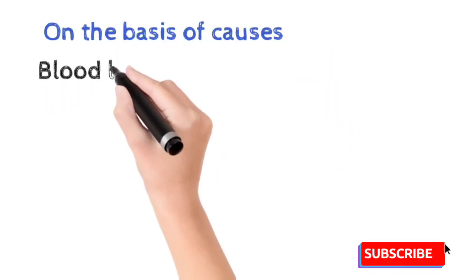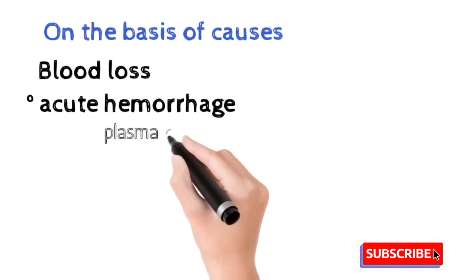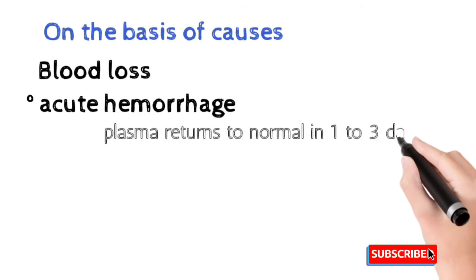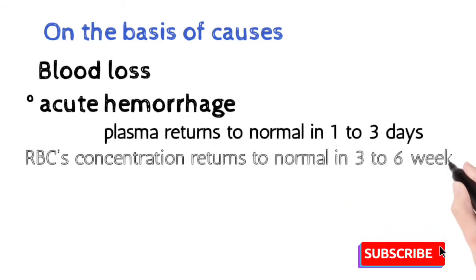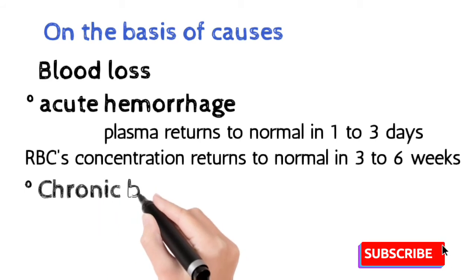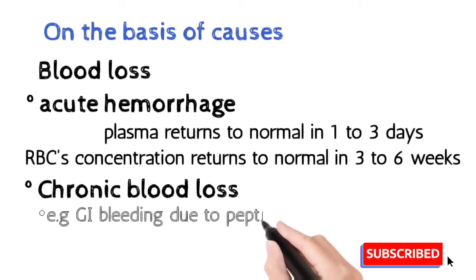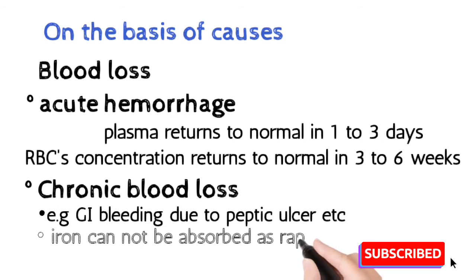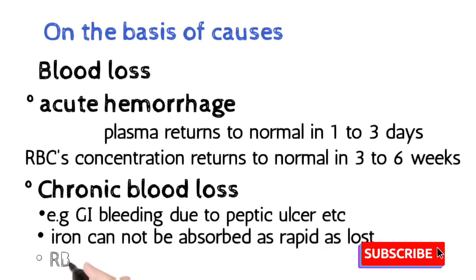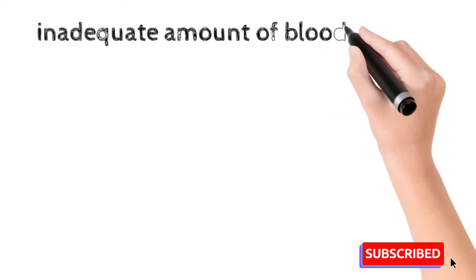On the basis of causes, number one is blood loss. In blood loss, we have the acute hemorrhagic condition, during which plasma returns to normal in one to three days and RBC concentration returns to normal in three to six weeks. The second type is chronic blood loss — for example, gastrointestinal bleeding due to peptic ulcer. During this condition, iron concentration is not adequate, iron cannot be absorbed as rapidly as it is lost, and RBCs produced are smaller in size — microcytic RBCs.